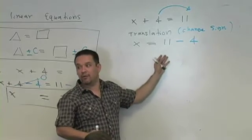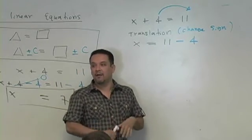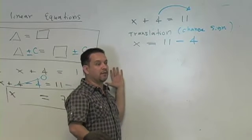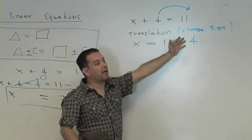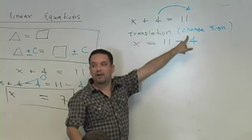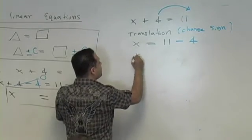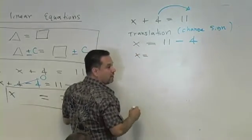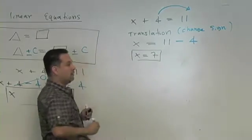These methods are equivalent. The summary of the shorthand for doing this process: when you translate, when you move the term to the other side, you simply change its sign. Now you get x equals what's 11 minus 4? 7. Isn't that what you had before?